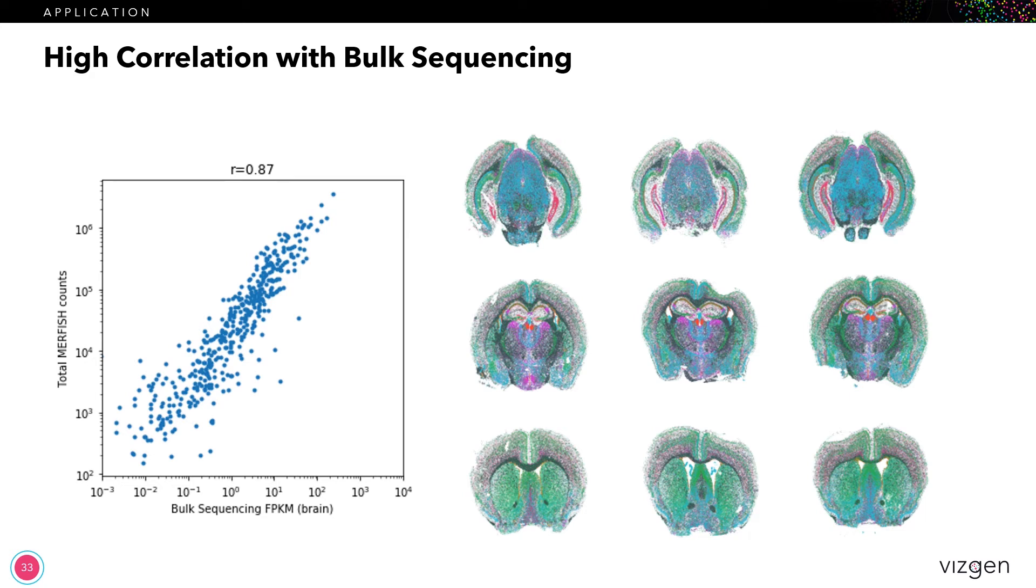And the theme of this talk has really been around data quality. And so as you might expect, we ran a number of experiments to rigorously test the quality of this data set. And as you can see here, we did a correlation with bulk sequencing. And in every case, all of the sections had an R value of around 0.87, which is really, really good.